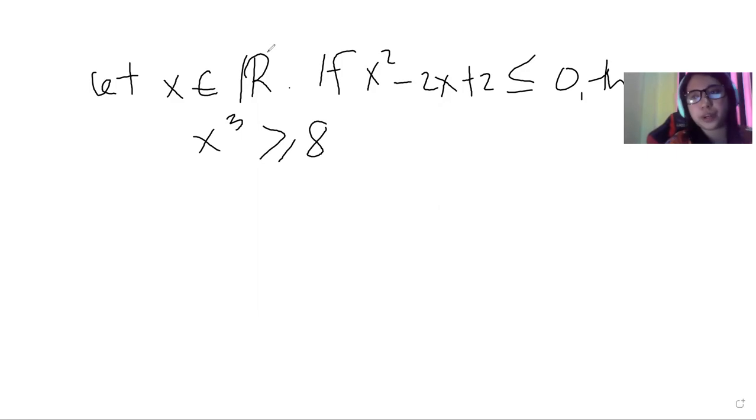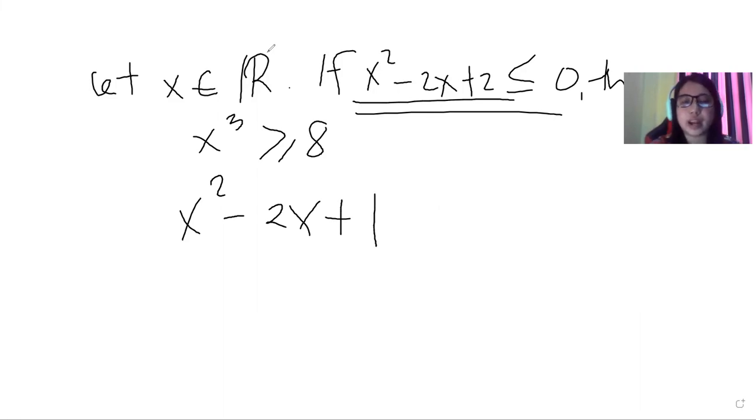If we observe, let us focus first on our first equation: x² - 2x + 1 is less than or equal to 0. So x² - 2x + 1 can actually be written as (x - 1)².